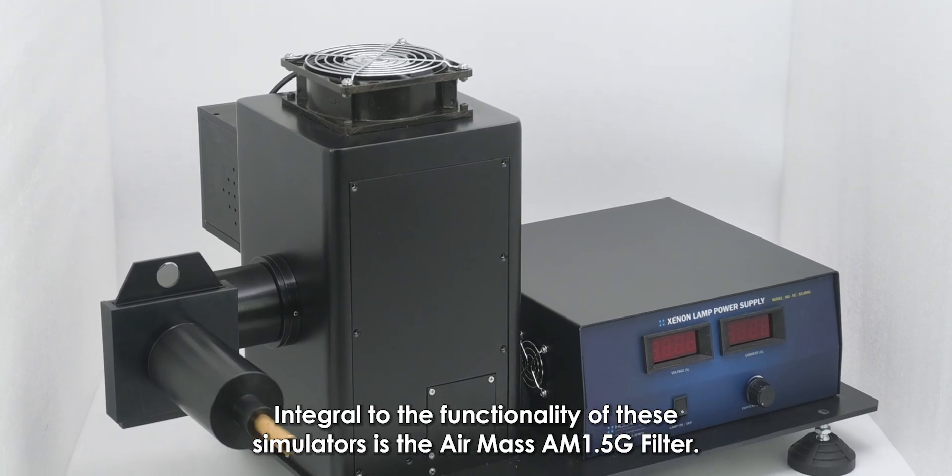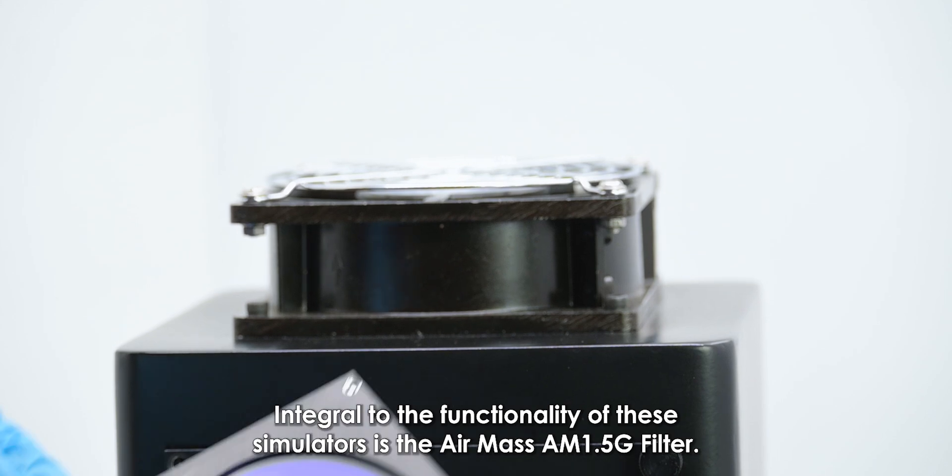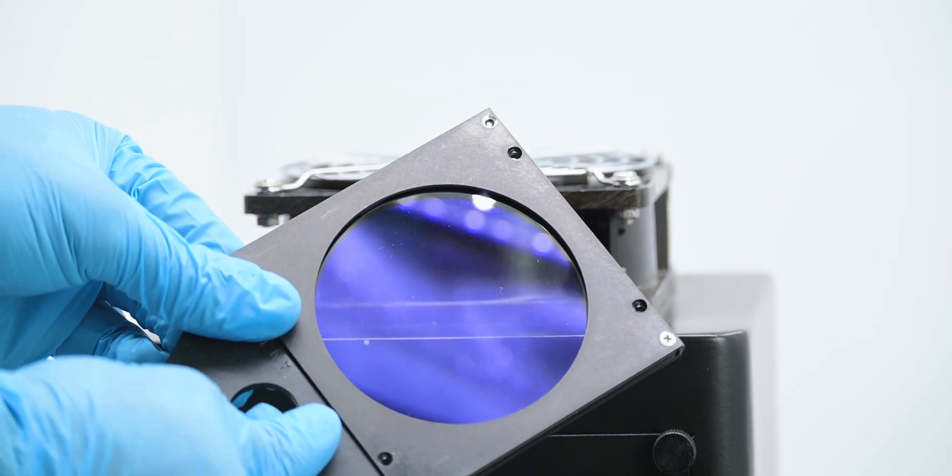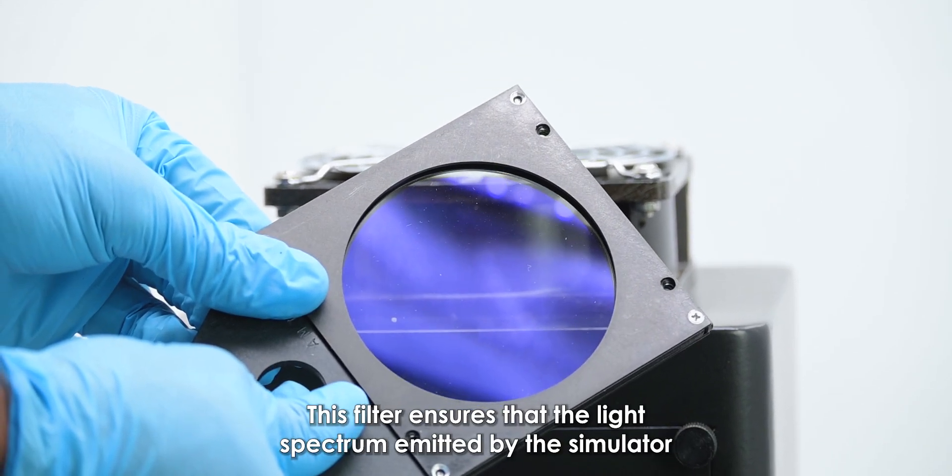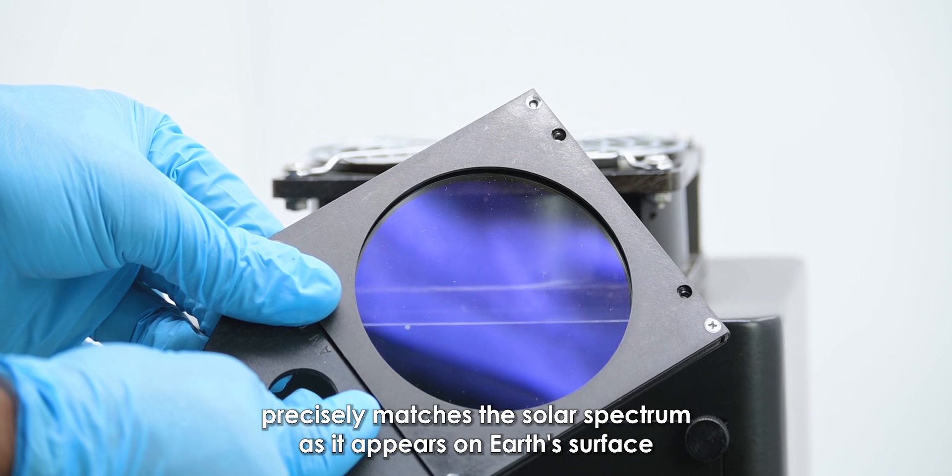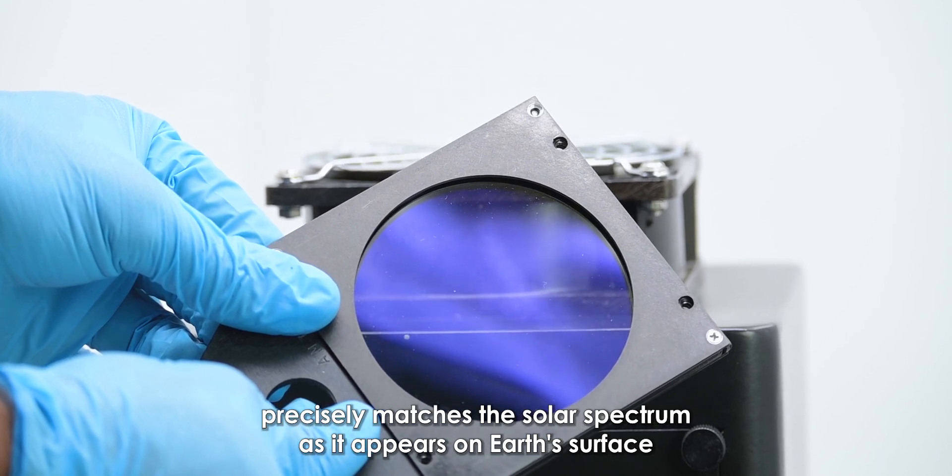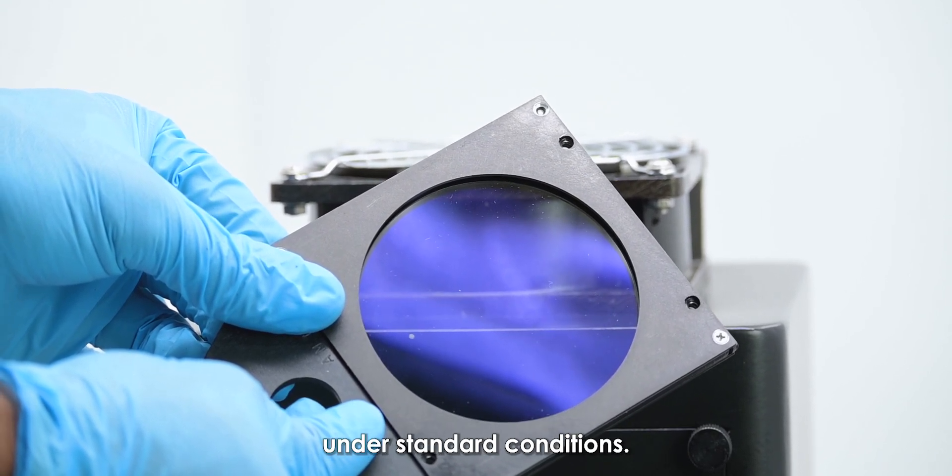Integral to the functionality of these simulators is the Airmass AM1.5G filter. This filter ensures that the light spectrum emitted by the simulator precisely matches the solar spectrum as it appears on Earth's surface under standard conditions.